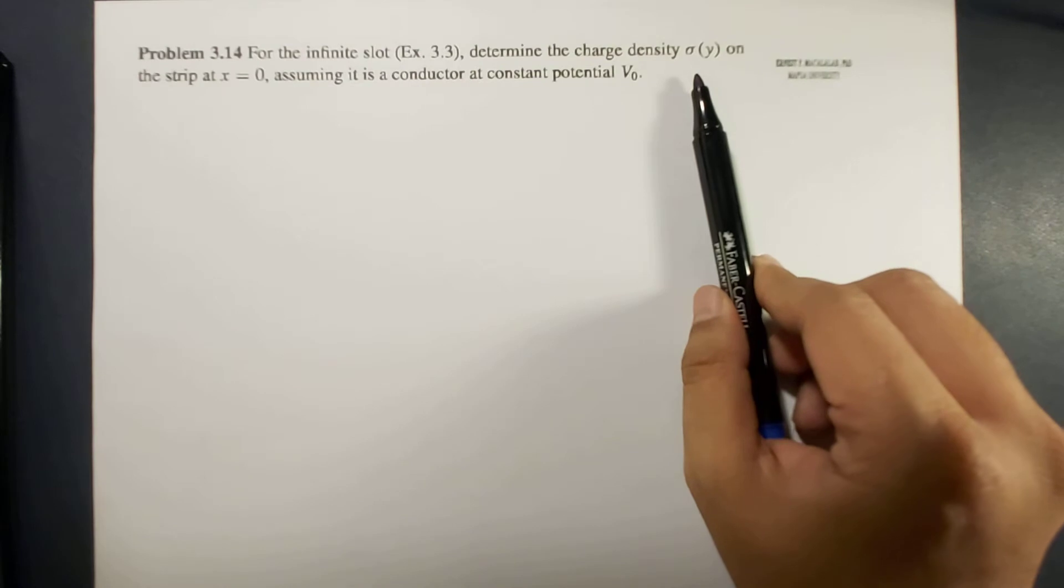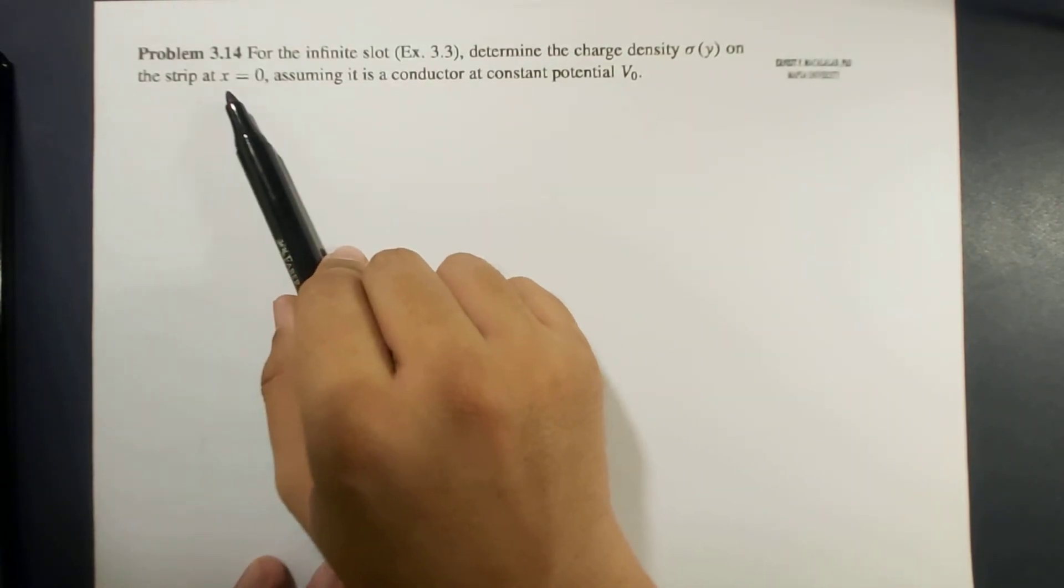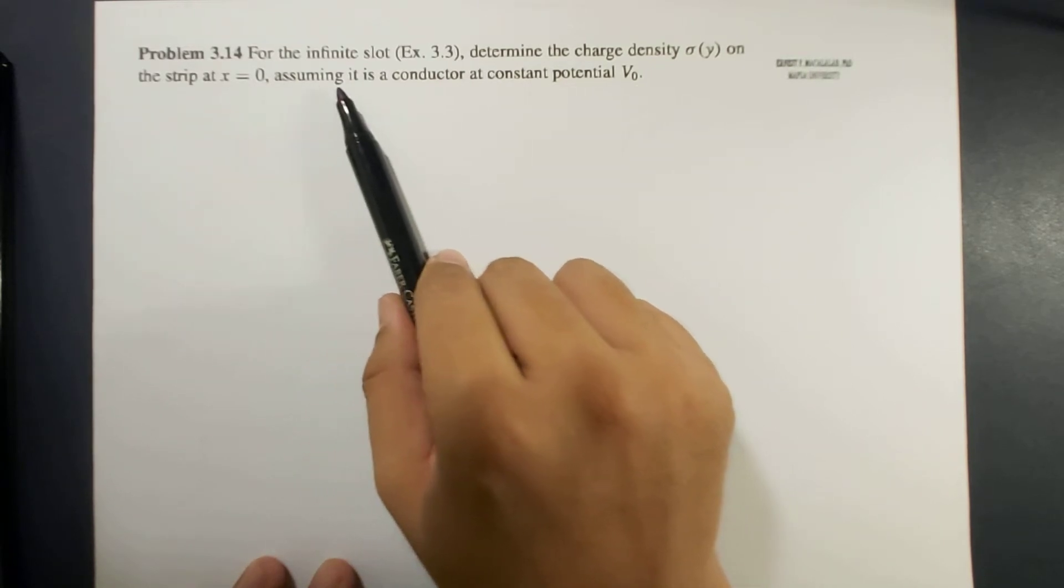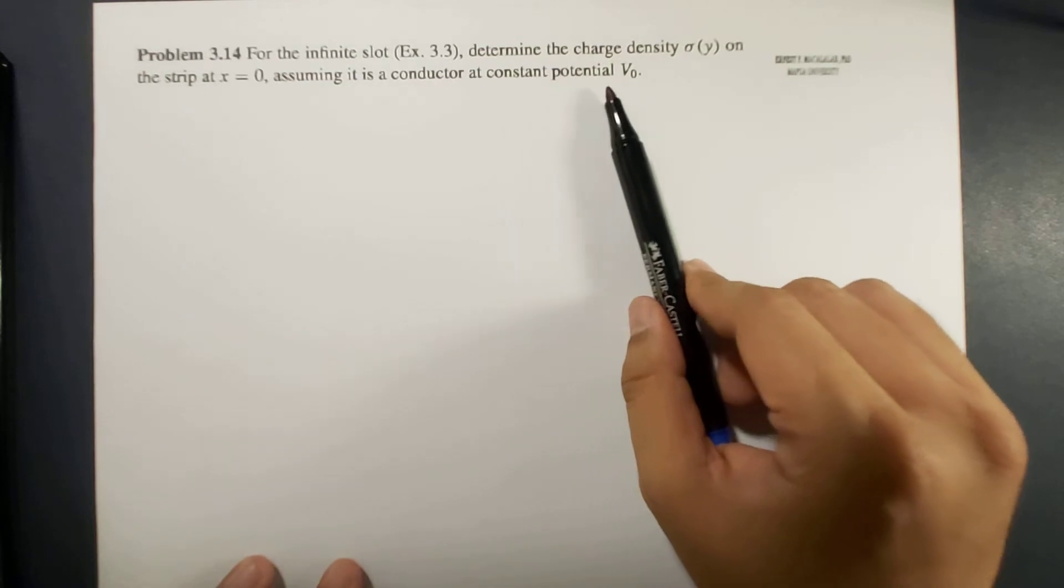specifically using the Cartesian coordinate system. So the problem reads, for an infinite slot, please refer to example 3.3 in your textbook, let's determine the charge density sigma, which is a function of y, on the strip at x equal to 0, assuming it is a conductor at a constant potential V0.